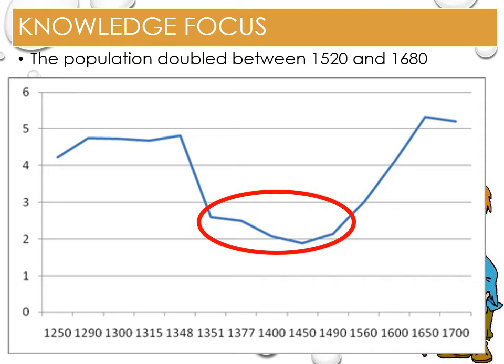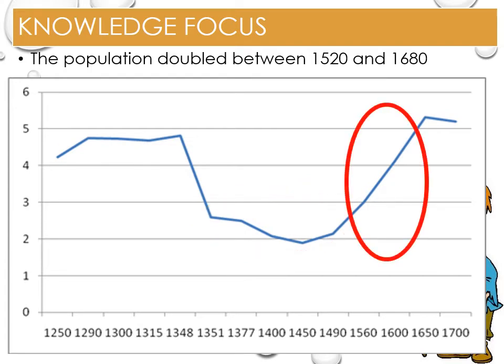Between 1348 and the start of the Tudor reign in 1485, the population saw further outbreaks of plague. However, the Hundred Years' War with France and the Wars of the Roses also impacted on the population. Due to the long period of peace, by the start of the Stuart reign the population had recovered from the impact of the Black Death. However, its legacy remained and the improvements in the quality of life for peasants were reversed due to inflation and the decline in work available for the increased population.